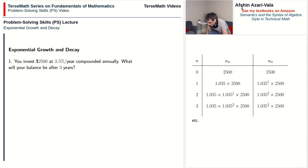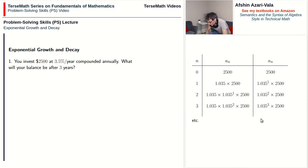By now we notice a pattern. At the end of year one we had 1.035 to the power of one; at the end of year two, 1.035 to the power of two; at the end of year three, 1.035 to the power of three. The exponent of 1.035 goes up by one as the number of years goes up by one — its value equals the number of terms. And this brings us to the formula.